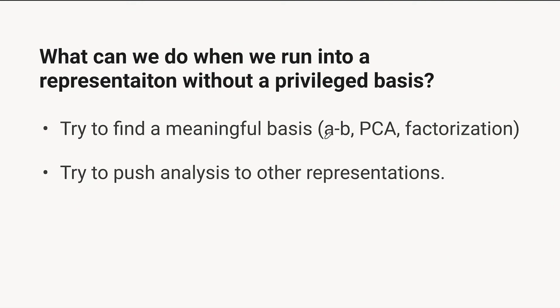In the case of trying to find a privileged basis, one thing that's been very successful especially in the word embedding context is to define a new basis in terms of differences between elements — people very often will define a gender dimension by doing 'man minus woman' or something like that, and then project things onto those dimensions. You might also apply dimensionality reduction techniques like PCA or ICA. If you want to do this, you want some kind of linear dimensionality reduction — a non-linear dimensionality reduction probably isn't very principled here — but you could do PCA and study those dimensions.